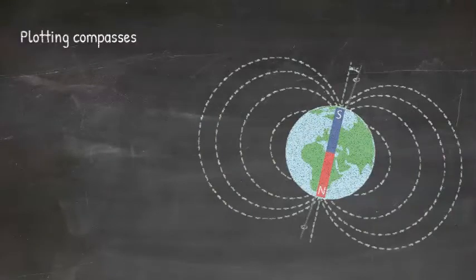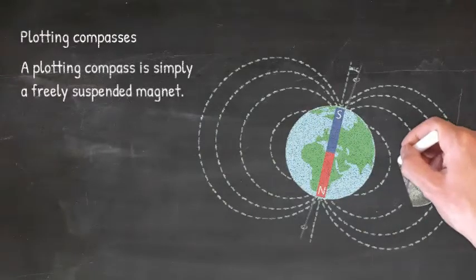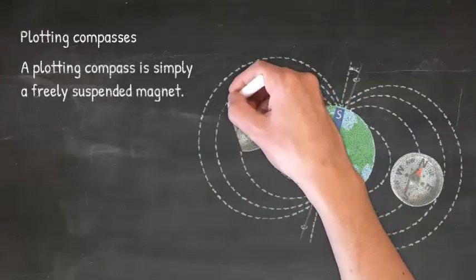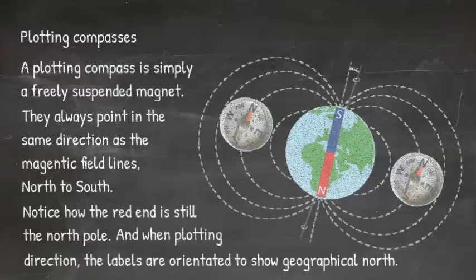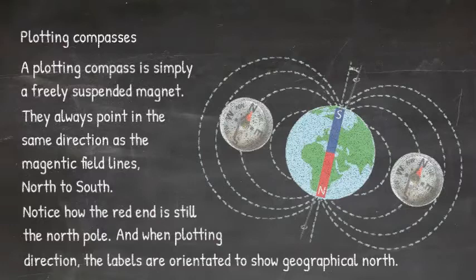So let's look at plotting compasses. A plotting compass is simply a freely suspended magnet. They always point in the same direction as the magnetic field lines, north to south. Notice how the red end is still the north pole. And when plotting direction the labels are orientated to show the geographical north.